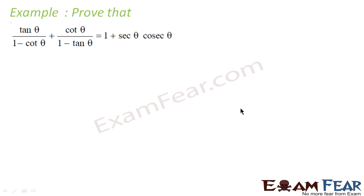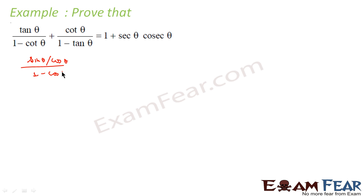Next: prove that tan θ/(1 - cot θ) + cot θ/(1 - tan θ) = 1 + sec θ·cosec θ. The best way to solve is to convert everything into sin and cos. Tan θ = sin θ/cos θ, cot θ = cos θ/sin θ. Let me write the LHS in sin-cos form.